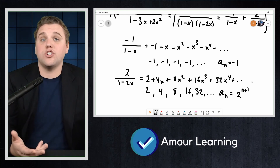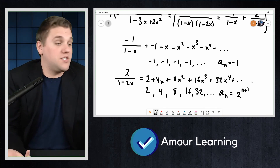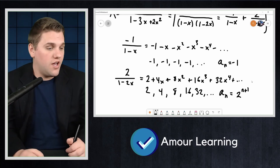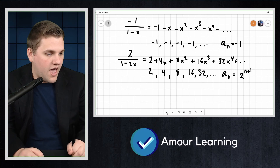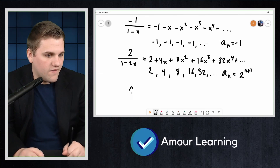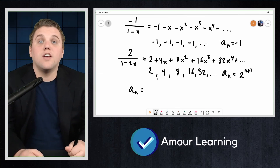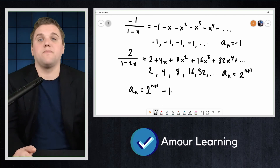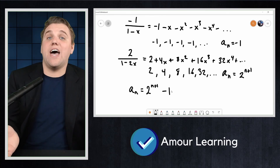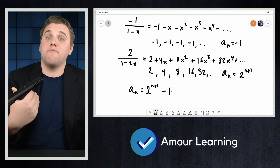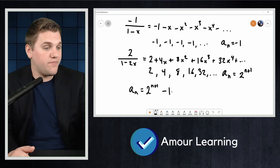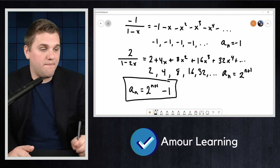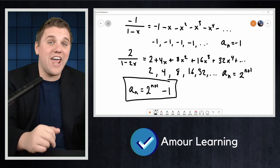The sequence we are interested in is just the sum of these two sequences. So the solution to the recurrence relation is a_n = 2^{n+1} − 1. We can now add generating functions to our list of methods for solving recurrence relations. Thanks everyone, and I'll see you in the next lecture.